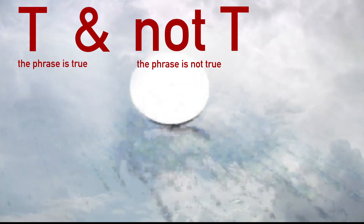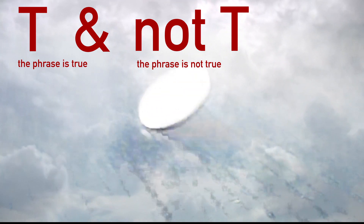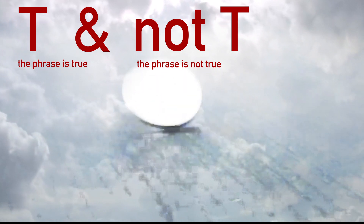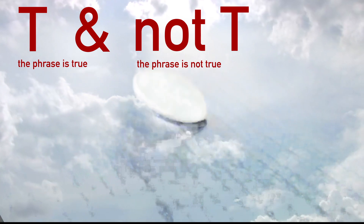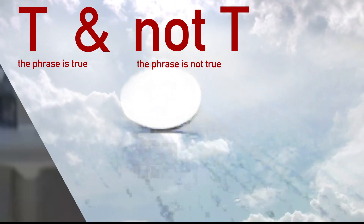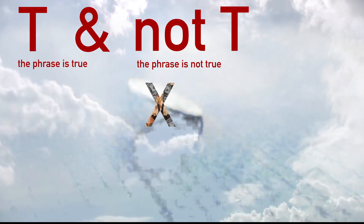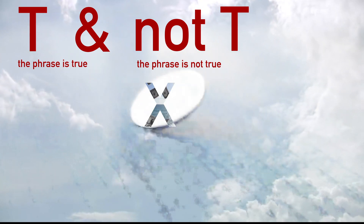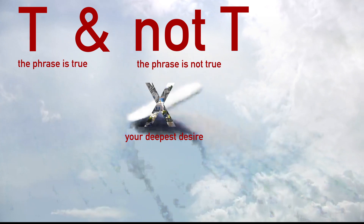The principle of explosion states that given a contradiction, anything can be proven true. This means that anything — truly anything — expressible in symbolic notation can be made true, regardless of its impossibility. Do you remember when I asked you to think of your deepest desire? Let us call that desire X. Now here is the crux of the equation: if T is the first part of our earlier contradiction and X is our deepest desire, can we say either T or X is true?